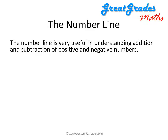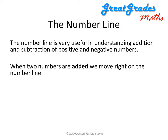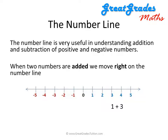The number line is very useful for understanding how to add and subtract different positive and negative numbers. When two numbers are added, we always move right on the number line. To illustrate that, let's try the sum 1 plus 3, which we know equals 4. We start at 1, and we move right three places, and that takes us to the number 4. So the answer, of course, is 4.